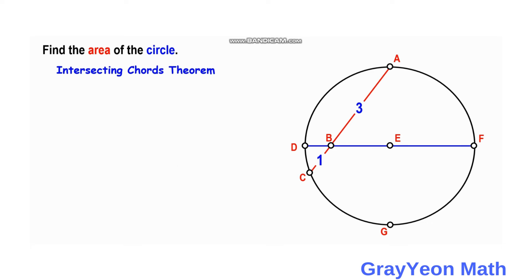Since we have two chords, diameter DF and chord AC, we can use the intersecting chords theorem. We label EF as R, the radius. If we label DB as X, then BE becomes R minus X.